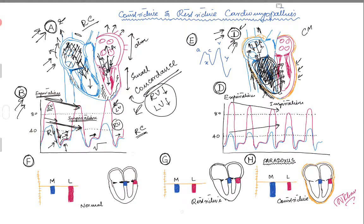Now you have this bigger RV cavity accommodating blood coming back through the venous circulation, but it is doing so by pushing the interventricular septum toward the left ventricle and decreasing the left ventricular cavity size. When the LV cavity size decreases, there is less filling of the left ventricle and the LV pressure goes down.